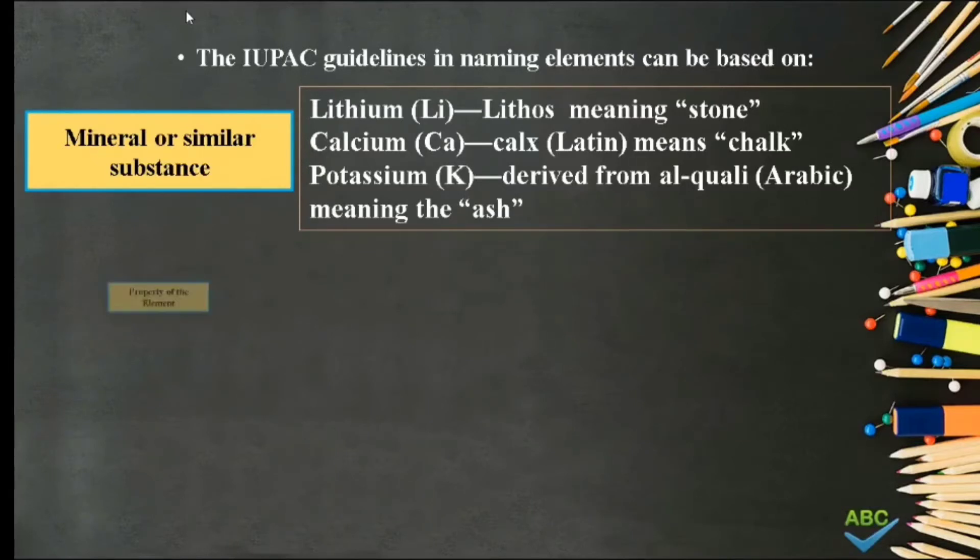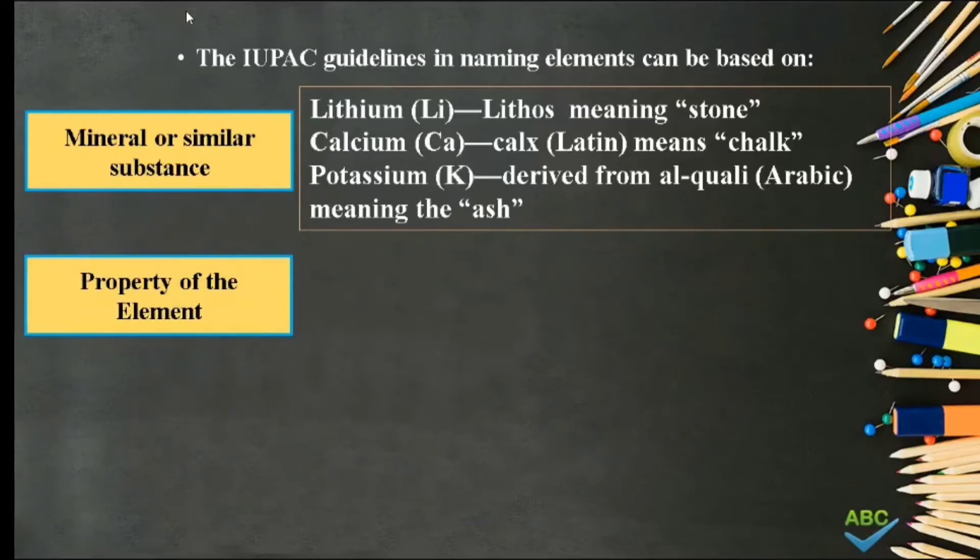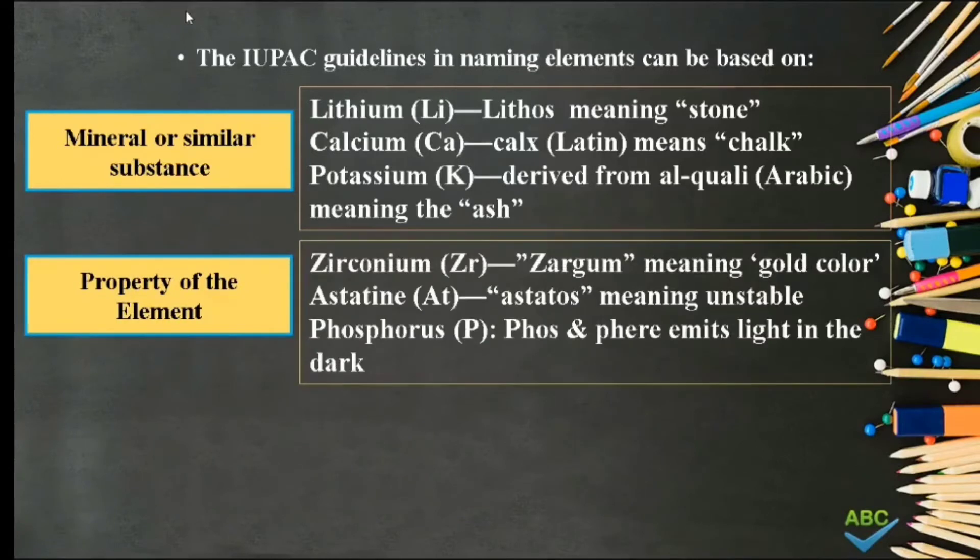Number 5. Property of the element. Such as Zirconium, from Arabic word zargum meaning gold color. Astatine, from Greek word astatos meaning unstable. And Phosphorus, from the Greek words phos and pyr meaning light bearing, since white phosphorus emits light in the dark.